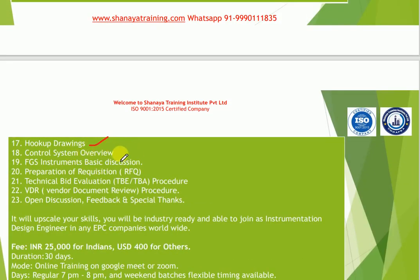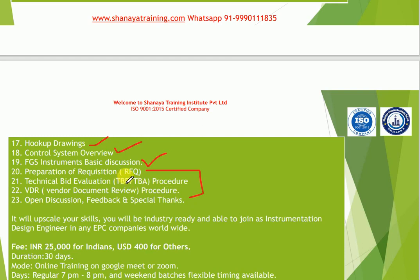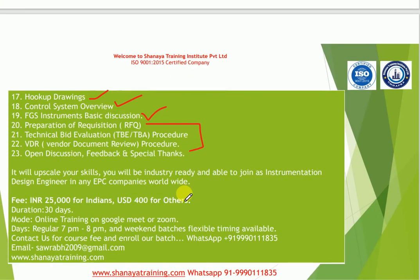We will discuss hook-up drawings, control system overview, and system parts like DCS, ESD, and FGS systems. Basic discussion on FGS instruments such as fire and gas instruments will also be covered. In the procurement support part, we will discuss how to prepare RFQs (Request for Quotation), how to do technical evaluation for any particular item, and how to perform vendor document review once an order is placed.